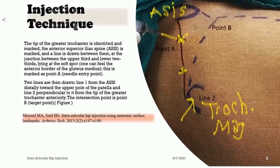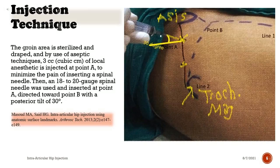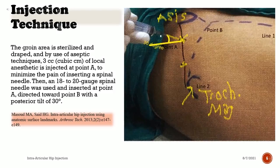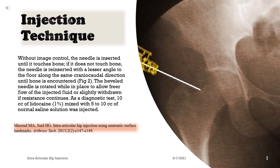The groin area is sterilized and draped, and using aseptic technique, 3 milliliters of local anesthetic is injected at Point A to minimize the pain of inserting the spinal needle. An 18- to 20-gauge spinal needle is then inserted at Point A, directed toward Point B, with a posterior tilt of 30 degrees.